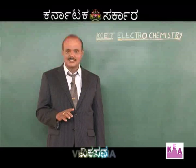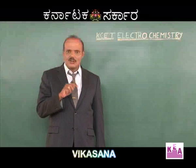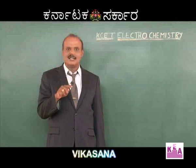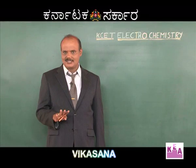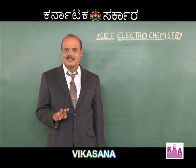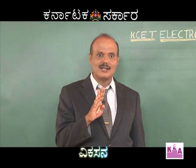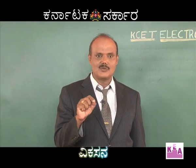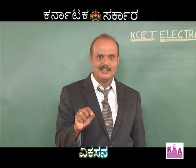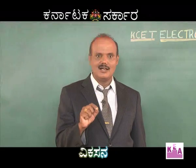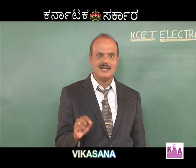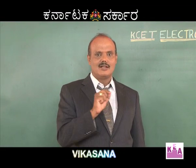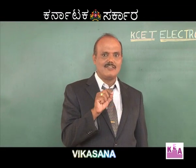Electrode potential depends on the concentration of the ions. At different concentrations, how to calculate the reduction potential is a major question. That is why we commonly use the Nernst equation.